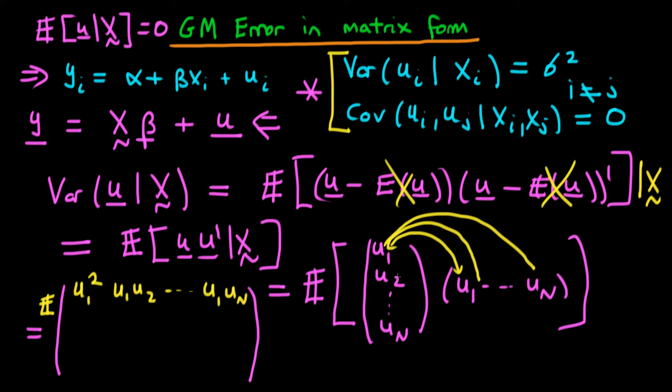Moving to the second row, the first term is u2 times u1. The second term is u2². If we continue to the right we have u2 times un. We could do this for every row and the last row shows the diagonal element is un².